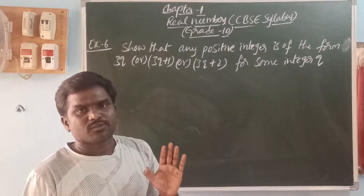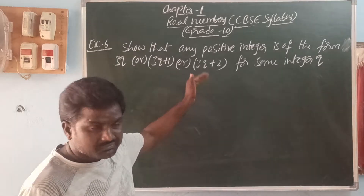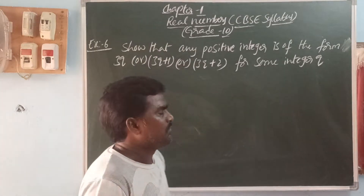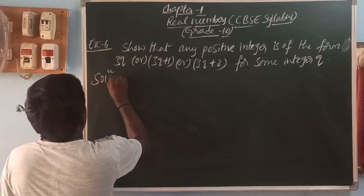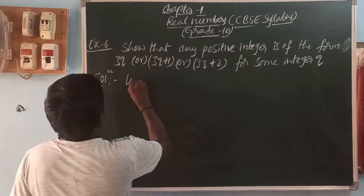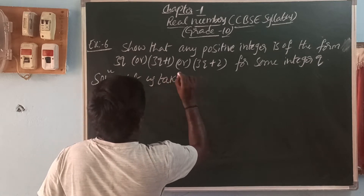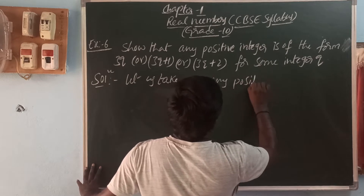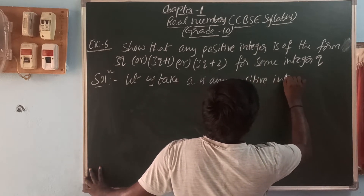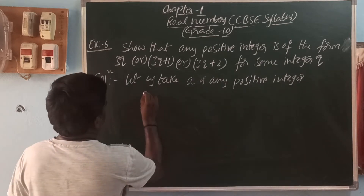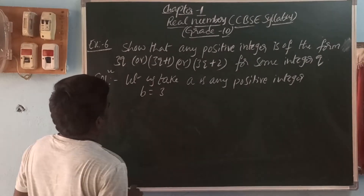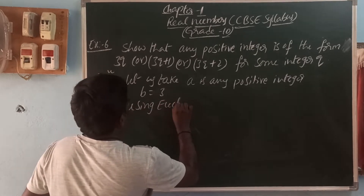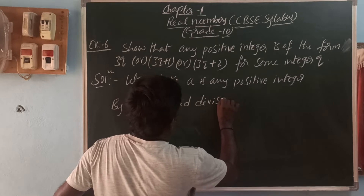What is the divisor here? 3. How we can prove this? By using Euclid division lemma. Let us take A as any positive integer and B is 3. By using Euclid division lemma.